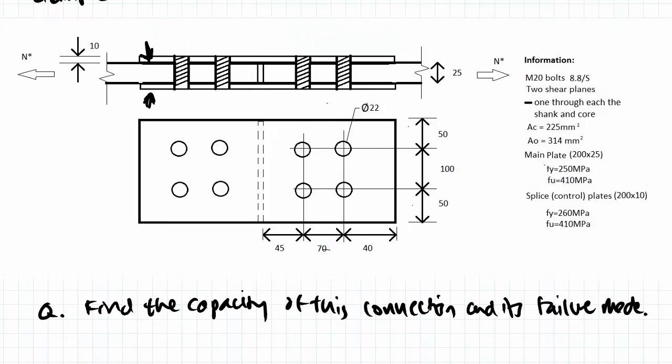So some important things we want to know for this connection is that we're using M20 bolts that are grade 8.8, and you'll see that 20 is the diameter of our bolt whereas 22 is the diameter of our bolt hole. Usually for grade 8.8 we have a hole that is two millimeters bigger. There'll be two shear planes.